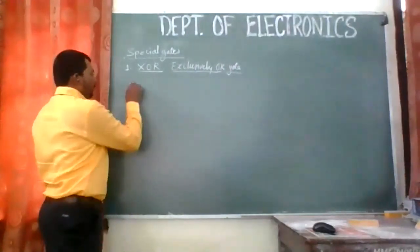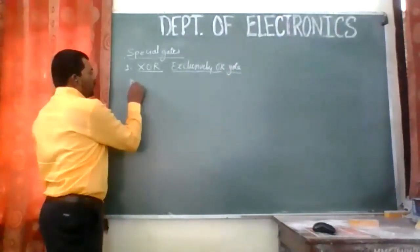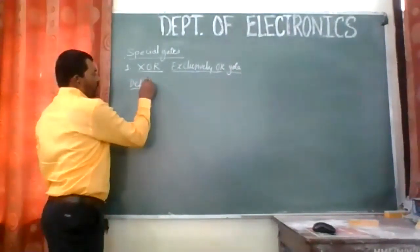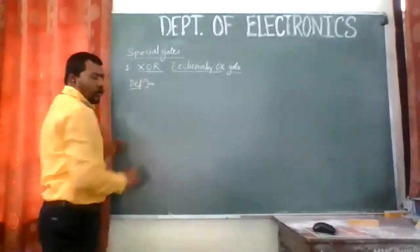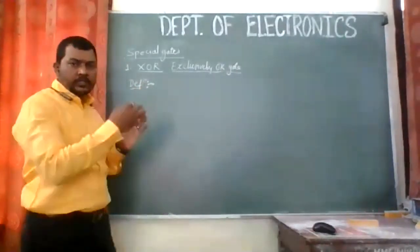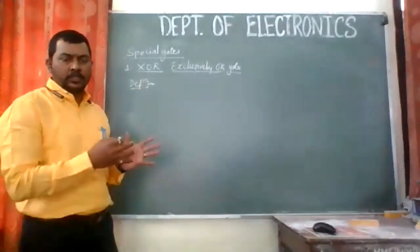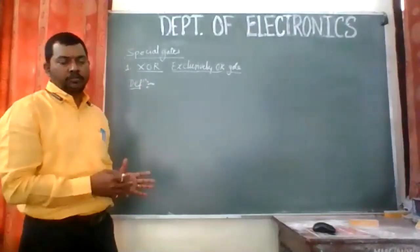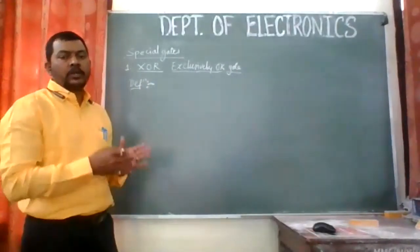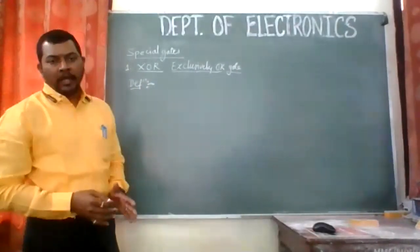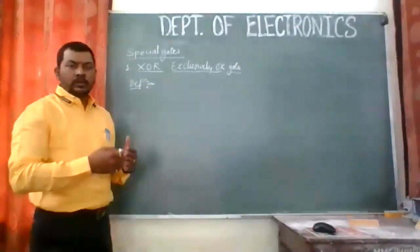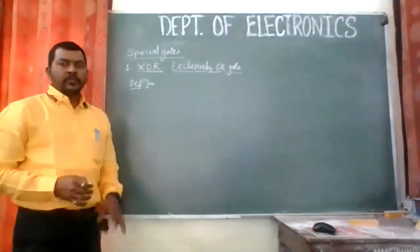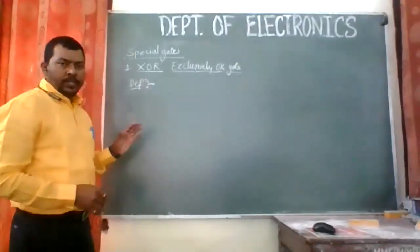As we have written, we will describe all gates in the same five-point pattern: definition, then Boolean expression, then symbol, then truth table, and then working.